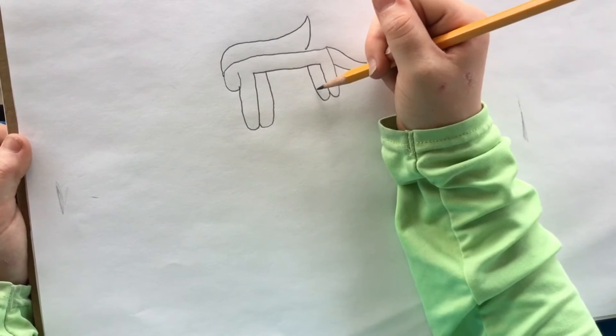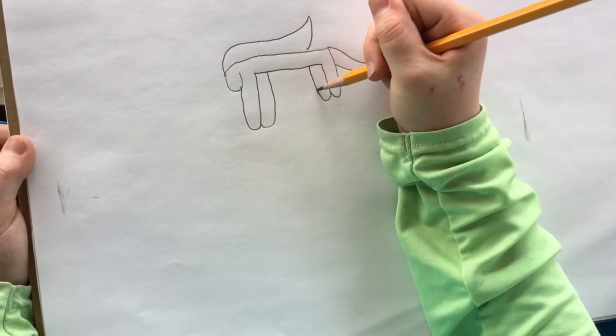Now we're going to do the hooves. The hooves are easy. You just do a line across.